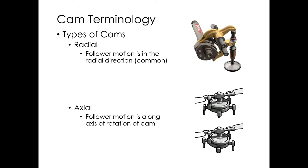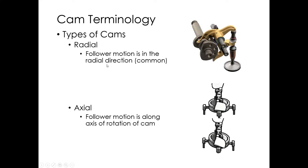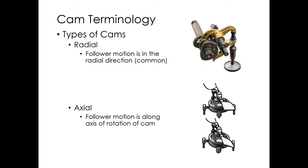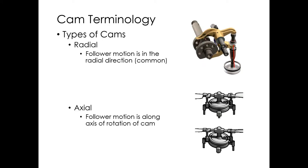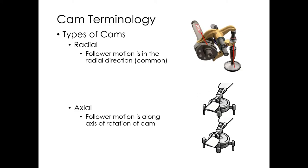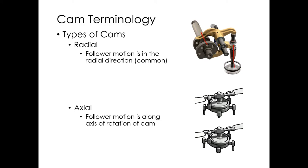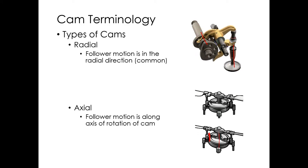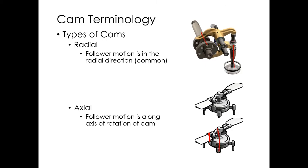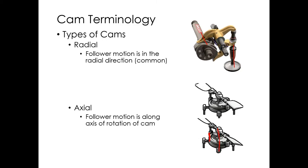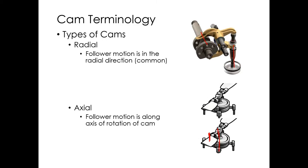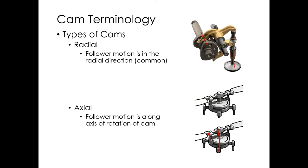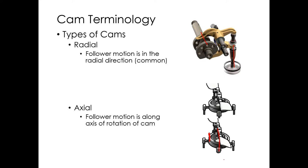Types of cam: radial cams have follower motion in the radial direction, like an automotive camshaft where the lifter motion is radial. Axial cams have follower motion in the direction of the rotation axis — like a swashplate in a helicopter. Barrel cams are a common type of axial cam. So there are radial and axial cams.